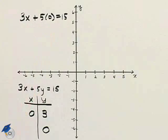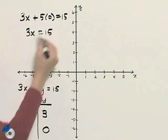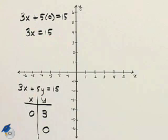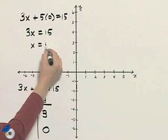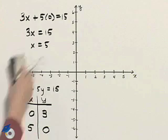5 times 0 is 0, so I have 3x equals 15. Divide both sides by 3, and we end up with x being 5. So when y is 0, x is 5.